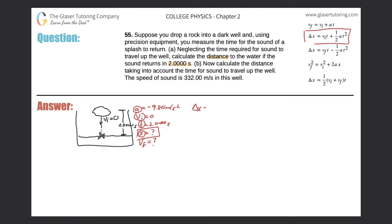The displacement equals the initial velocity times time plus one-half of the acceleration times time squared. The initial velocity was zero, so that whole term goes away, leaving one-half times negative 9.80 times the time squared. Don't forget to square that result — that's where you'll lose points from a silly mistake. So 0.5 times negative 9.8 times 2 squared comes out to negative 19.6 meters.